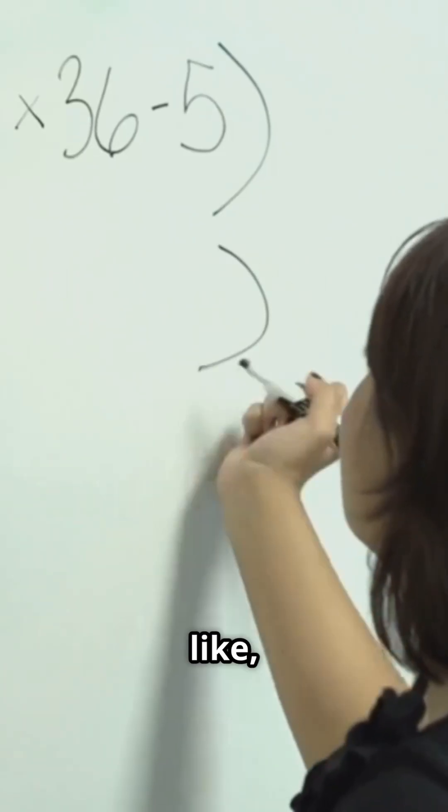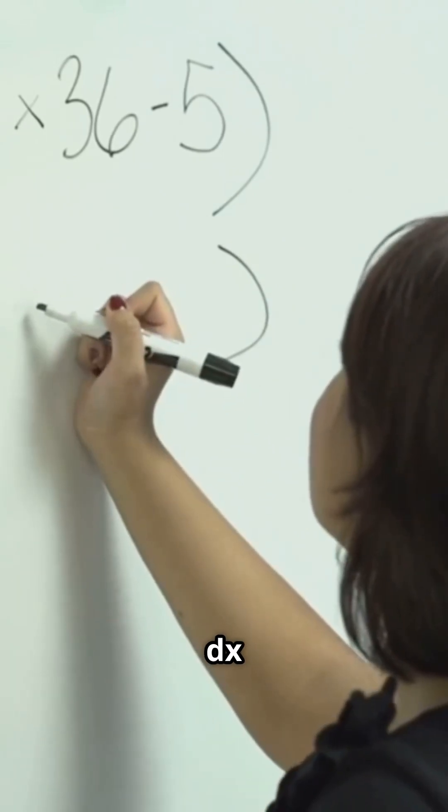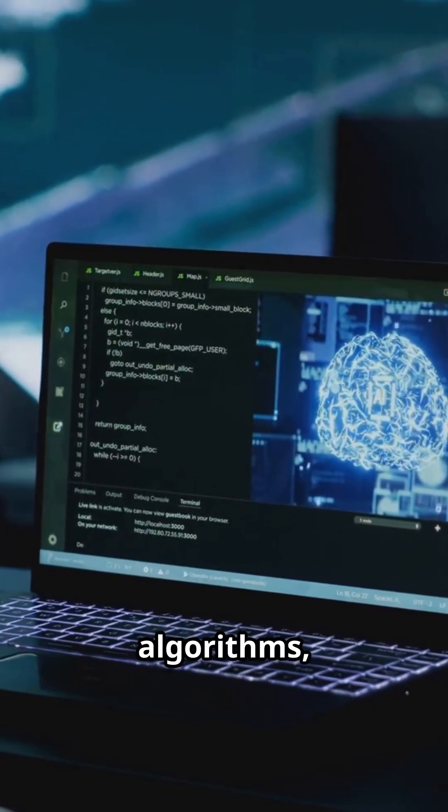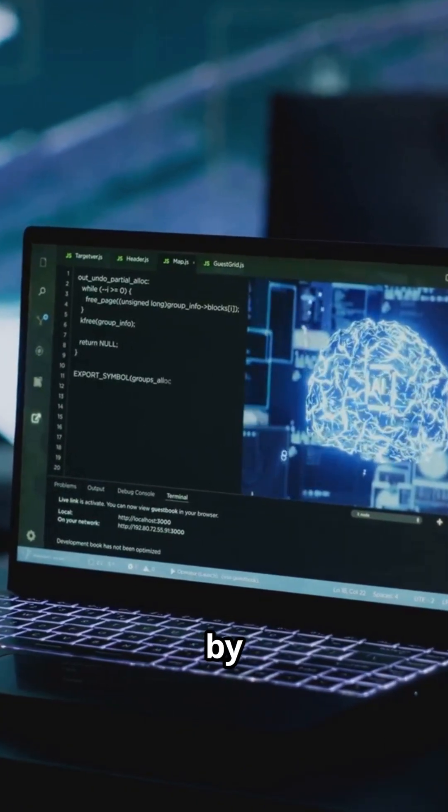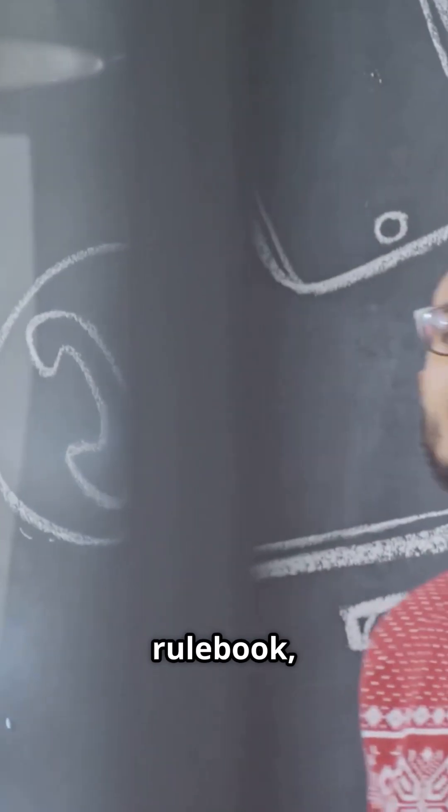When you throw them an integral like, say, X^3·sin(X)DX, they match patterns, run algorithms, and spit out perfect answers step by step. The good? They're pretty much never wrong. The bad? They can't invent new tricks. If it's not in their rulebook, it's not happening.